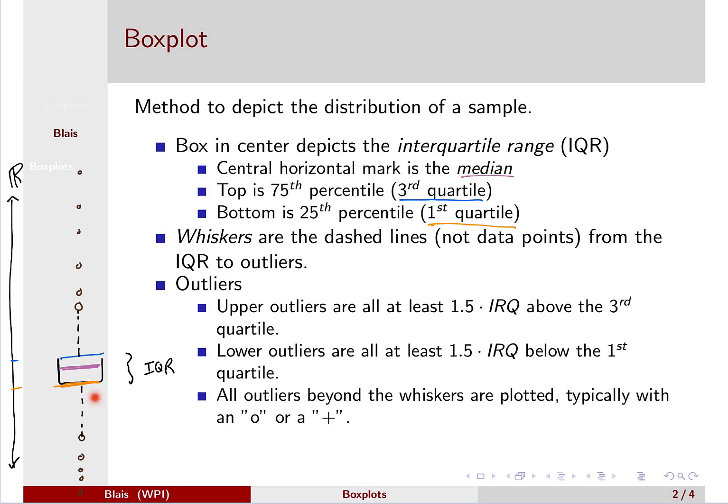So you may have data happening where these whiskers are. You will have data where these whiskers are but it's not depicted. And so the idea here is that you're getting the meat of the data, the middle half of the data, and then you're seeing something about how spread out it is and you're explicitly seeing the outliers. And this is a visual way of looking at a data set.